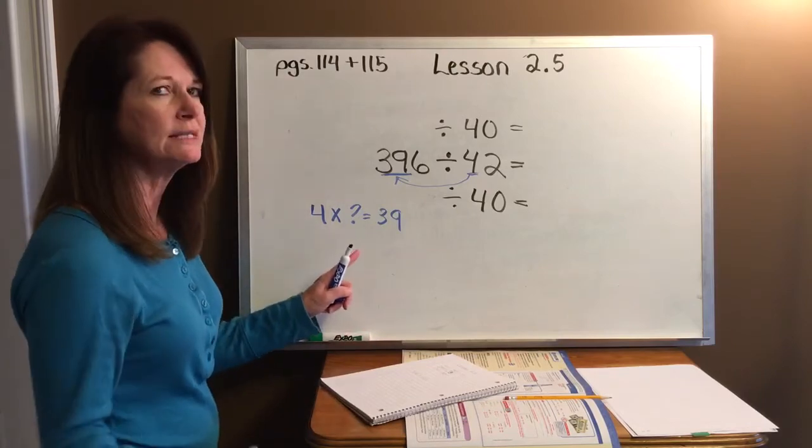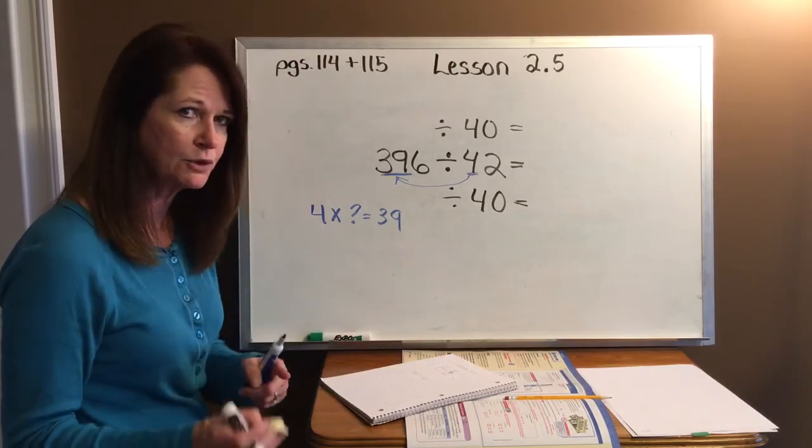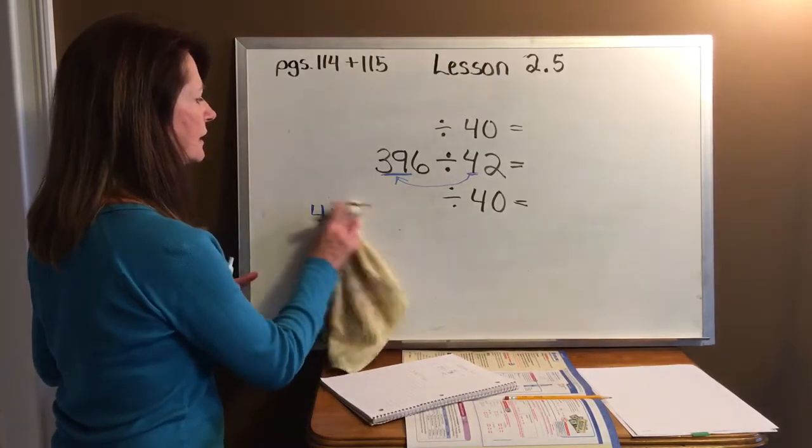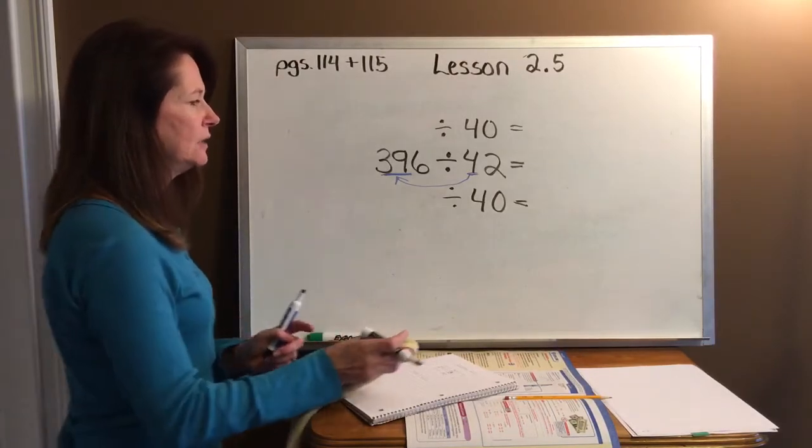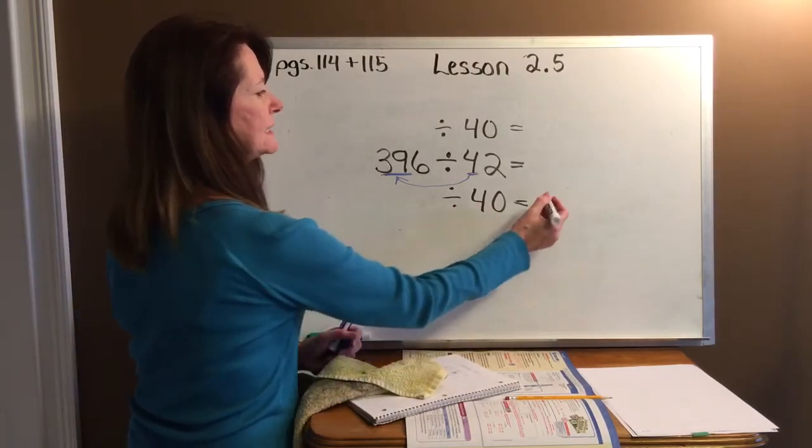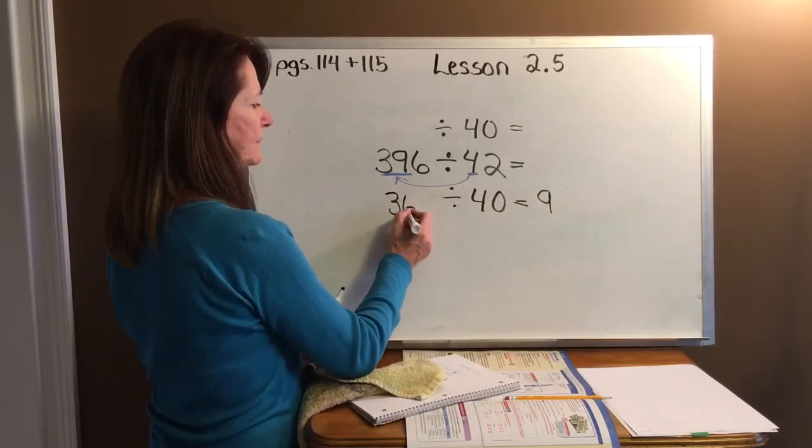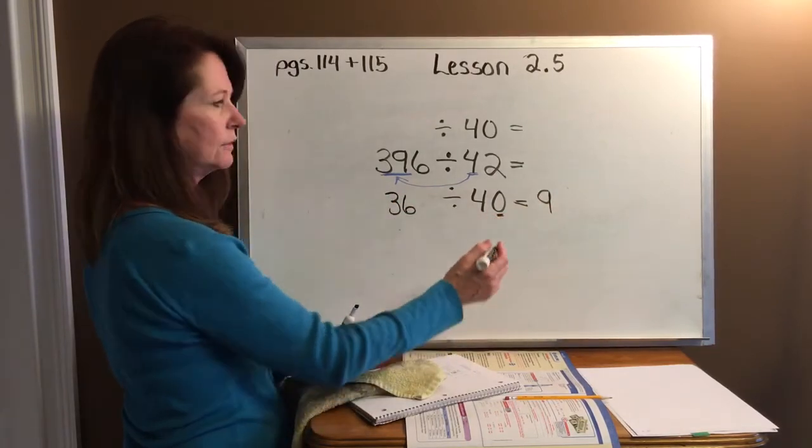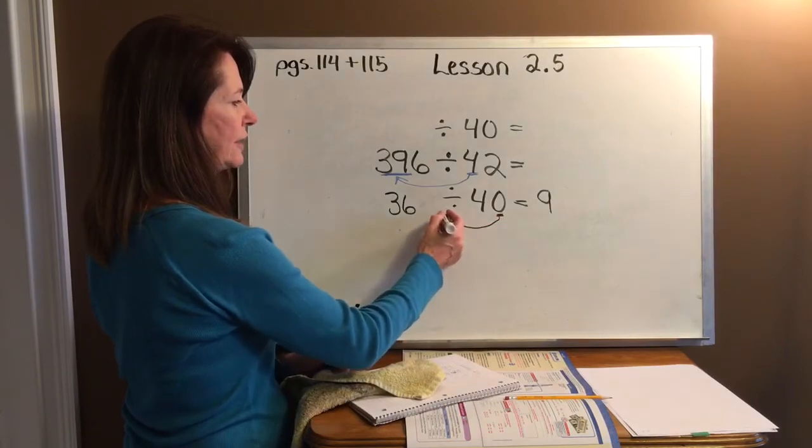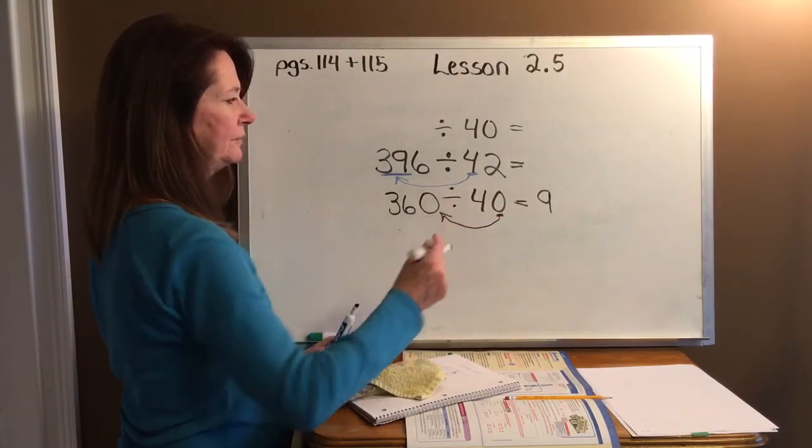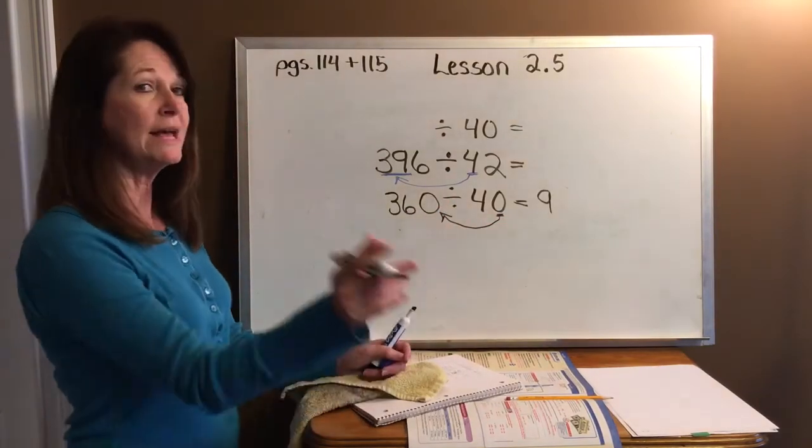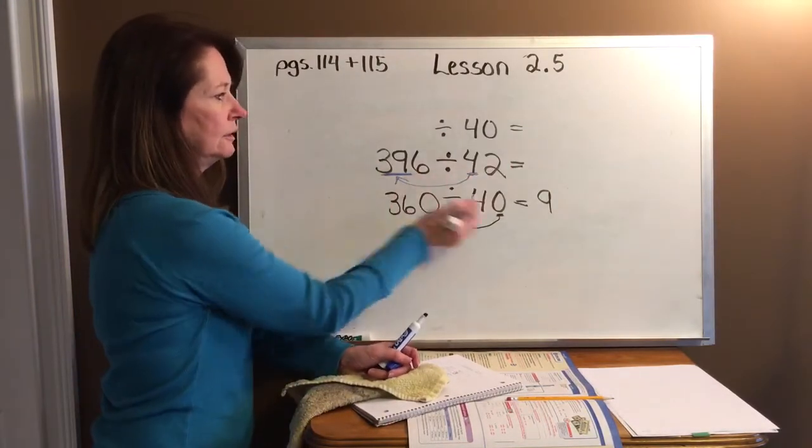4 times 9 is 36. So, again, I'm going to erase this. You keep it on your paper so you can remember. All right. Erase this to get it out of my way. So, 4 times 9 is 36. Tack on that 0. Go ahead and draw that arrow if you want. Tack on that 0. So my low estimate for this answer is 9.